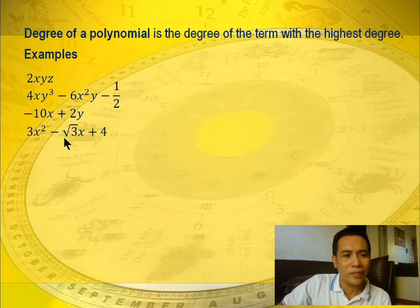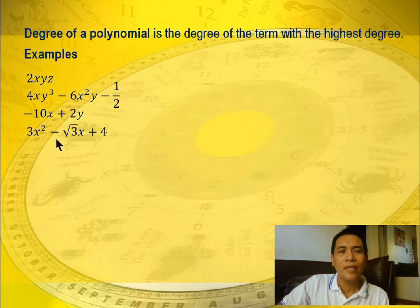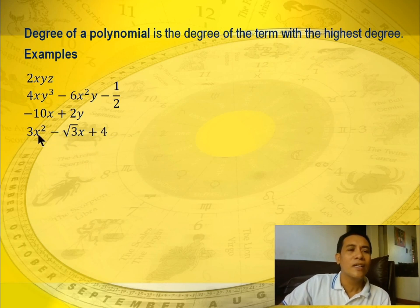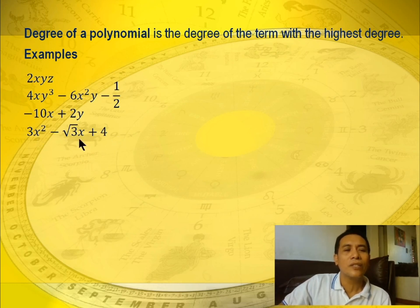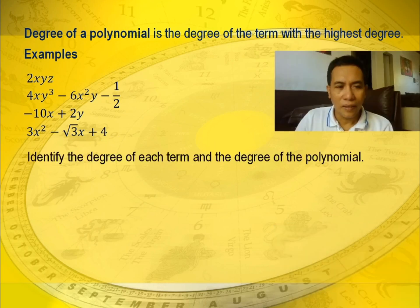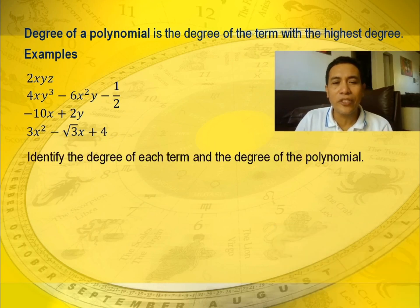Another example: 3x squared minus the square root of 3x plus 4 — this is a trinomial. The degree of the first term is 2, the second term is 1, the third term is 0. So the degree of this polynomial is 2. Now let's go to identifying the degree of each term and the degree of the polynomial using a table.